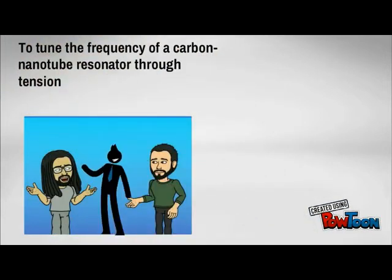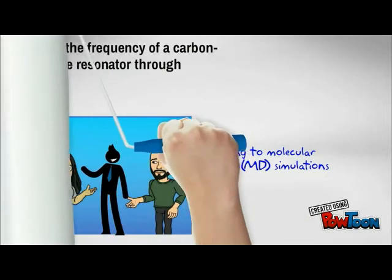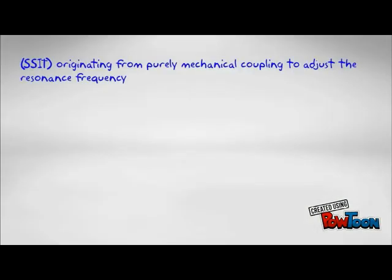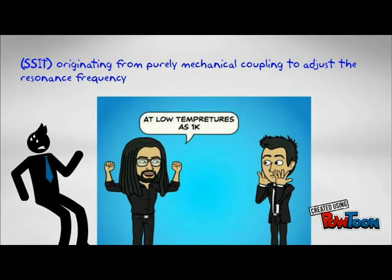Many applications require a desired frequency to tune the frequency of carbon nanotube resonators through tension. Molecular dynamics MD simulation based on Tersoff-Brenner potential was used to model the tuning of nanotube resonators by adjusting the rotation angle using shear strain induced tension SSIT that originated purely from mechanical coupling to adjust the resonance frequency with the temperature set to 1K. How was it done?